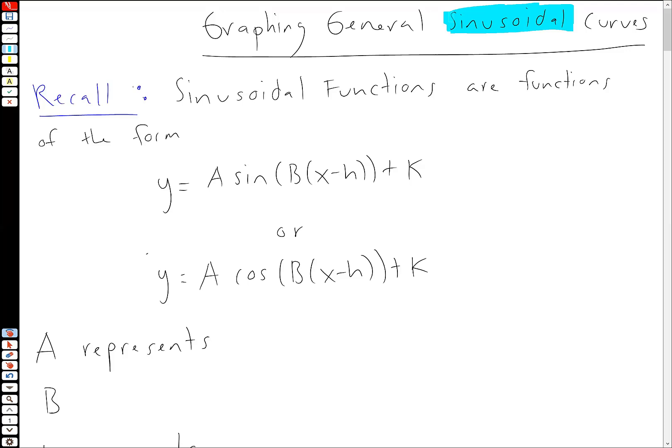So let's recall a couple of things before we get into this. First of all, these are the types of functions we're going to be dealing with. Y equals A sin of B times X minus H plus K. So that's a transformed sine curve or a transformed cosine curve.